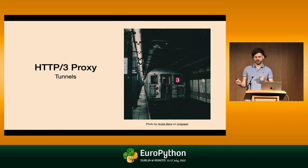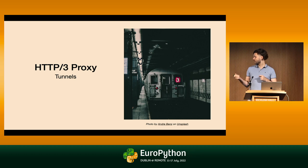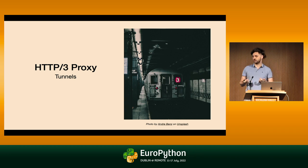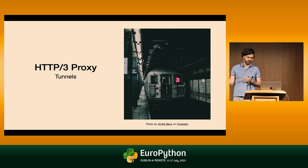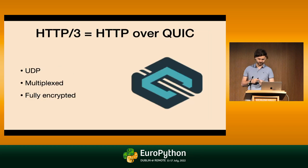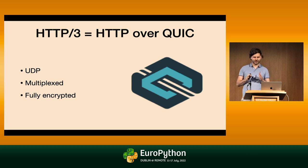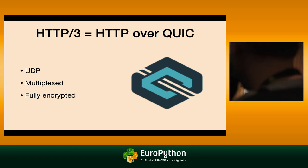MASQUE proxies are normal HTTP proxies, just with one important difference: they are using HTTP/3 instead of the common HTTP/1. So if MASQUE proxies are just HTTP proxies — HTTP/3 proxies — the question is: what is HTTP/3? What makes it so special to talk about it?